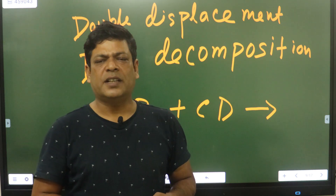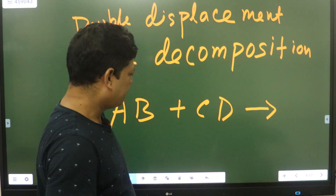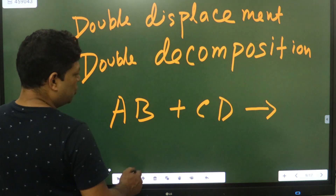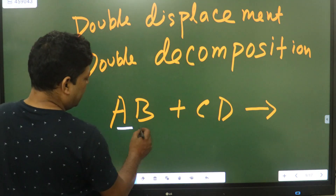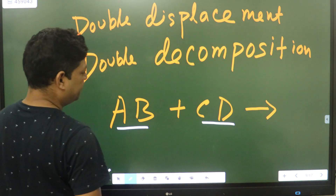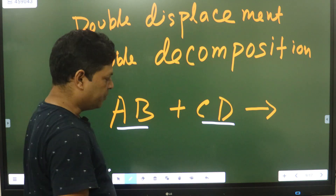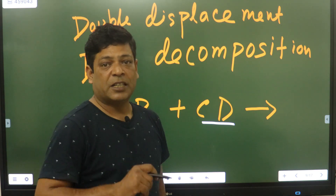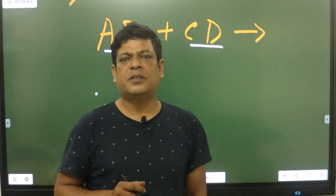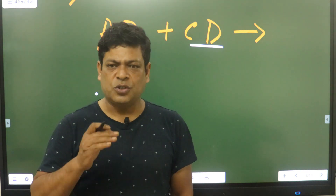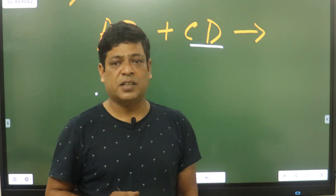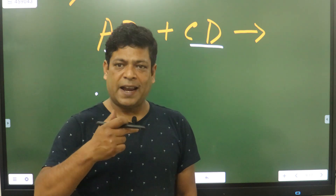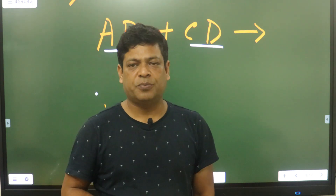Double displacement is not just an example. For example, when you have A, B reacting with C, D, what is the product? Generally, double displacement is a solution. When you have a mutual transfer, the compound will react and the product will form.